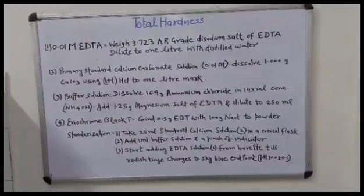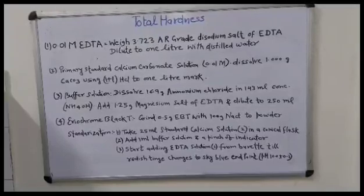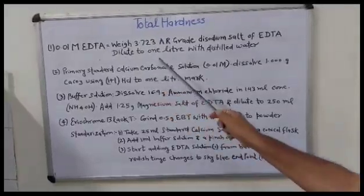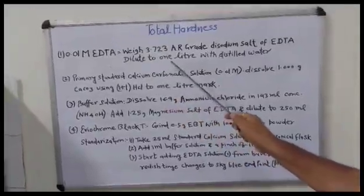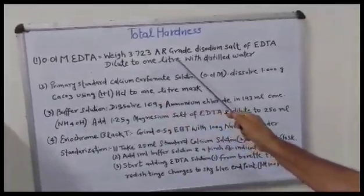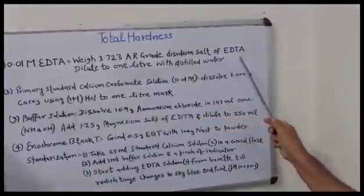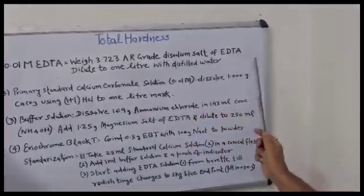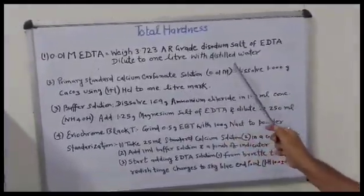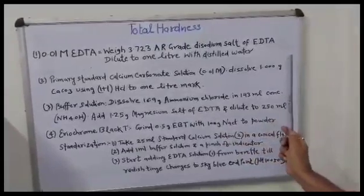We have to prepare 0.01 molar EDTA by dissolving 3.723 grams of AR grade disodium salt of EDTA. Dilute it to 1 litre with distilled water.